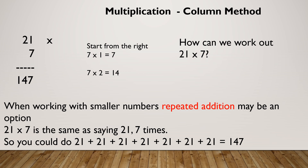I'm going to do one more example. Let's do 42 times by six. I'm going to start from the right. Six times by two is 12, so I'm going to put my two down and carry my one. Then six times by four — six times four is 24, plus my one is 25. So that gives me 252 as my final answer. I'm working from right to left.